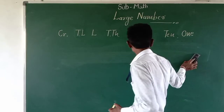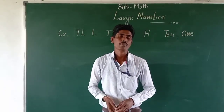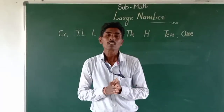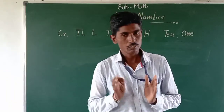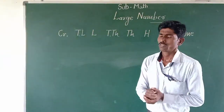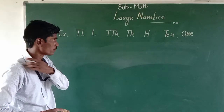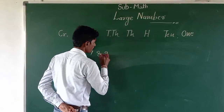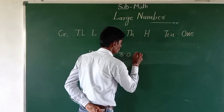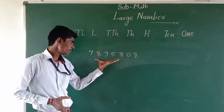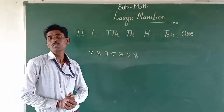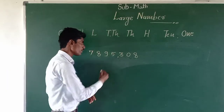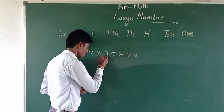After that, we will discuss about inserting a comma. Inserting a comma helps us to separate the periods and the value of a number. So we will take an example of separating a number with the help of commas. Suppose we have 7, 8, 9, 5, 3, 0, 8. We have to insert commas in this number. While inserting the comma, first we leave 3 digits from the right and insert a comma. After that, we leave 2 more digits and insert another comma.